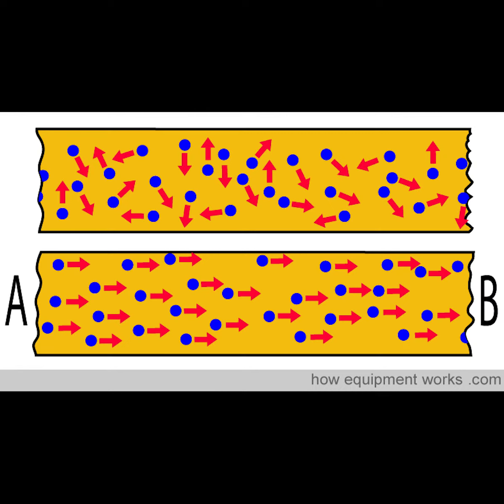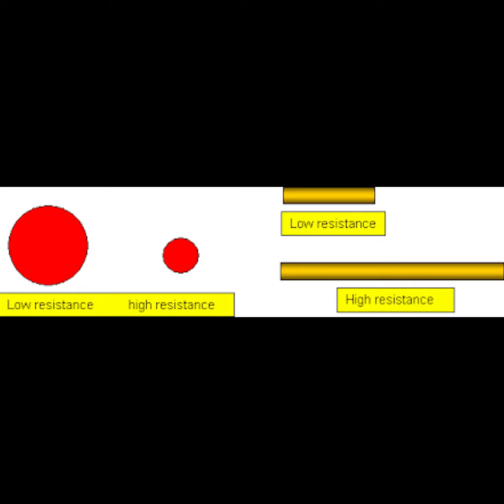As the electricity flows, the electrons jostle about and collide with one another, and with the atoms in the metal wire, giving off heat in the process. The thinner the wire, the greater the electrical current, because more collisions happen and more thermal energy is generated this way.